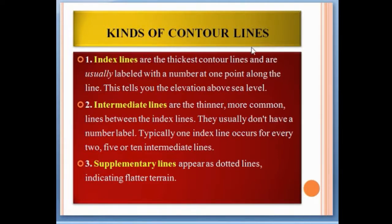There are three types of contour lines: index lines, intermediate lines, and supplementary lines. Index lines are the thickest contour lines and are usually labeled with a number at one point along the line — this tells you the elevation above sea level.